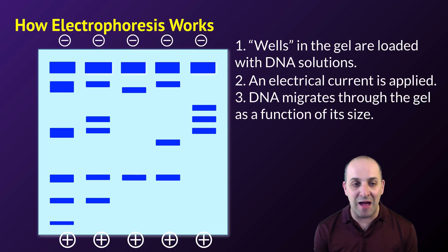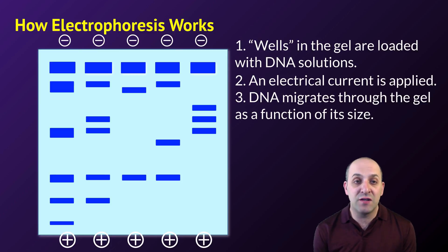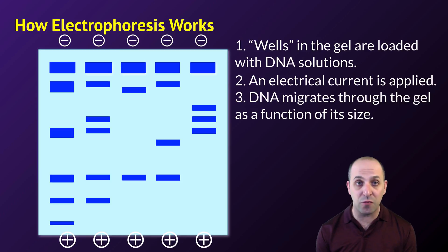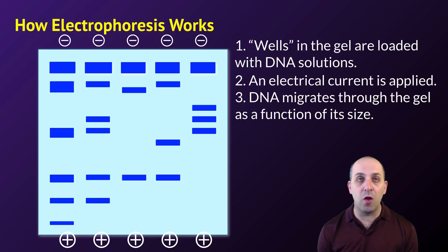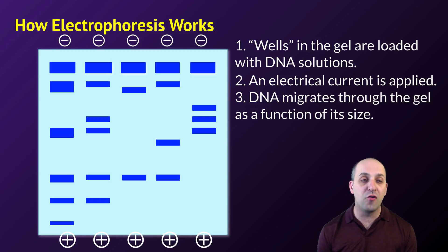The DNA migrates through the gel matrix as a function of its size, with similarly sized pieces of DNA traveling at similar rates. Smaller pieces of DNA will move further through the gel, as they have an easier time getting through the matrix of holes. Larger pieces will not move as much. So when we look at a gel, the pieces closest to the wells are the largest pieces, and the pieces furthest away are the smaller pieces.